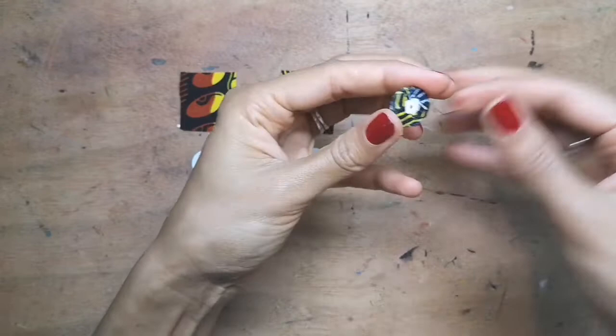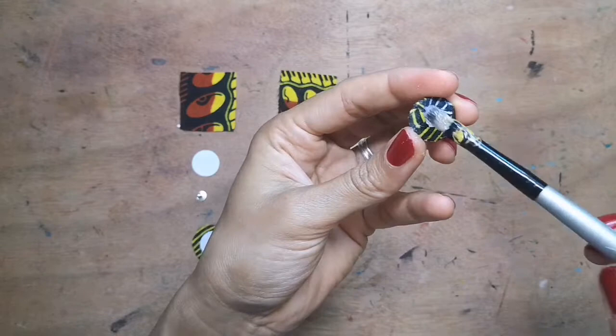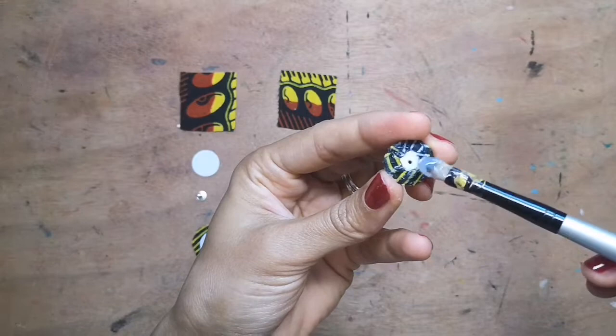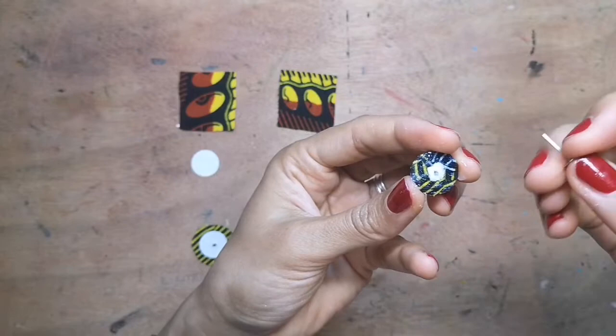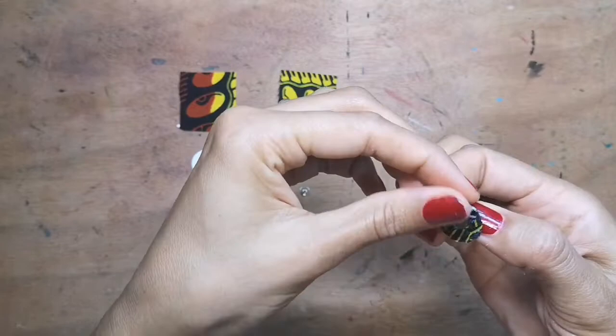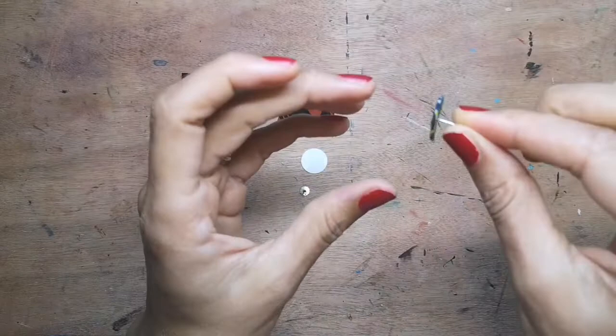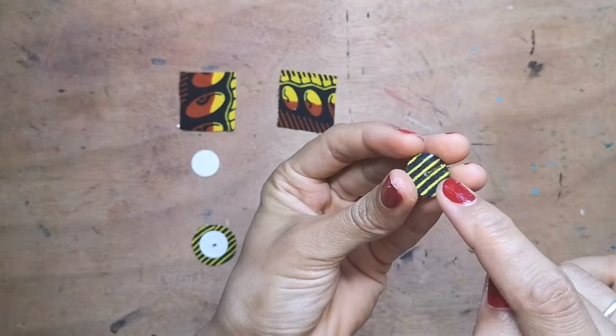You can even just add a bit more Mod Podge to secure those flaps of fabric and pop some in the middle because what we're now going to do is add our earring finding like this. Can you see that there?